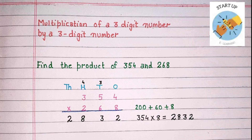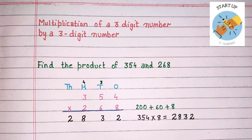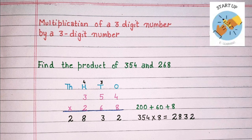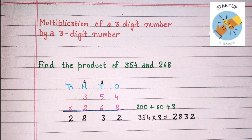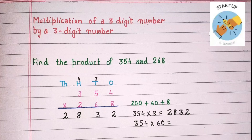Now 8 will be multiplied by the digit at the tens place: 8 fives are 40, plus 3 carry over, is equal to 43. So 3 will be written under tens and 4 will be carried on to hundreds. Now 8 will be multiplied by the digit at the hundreds place: 8 threes are 24, plus 4, is equal to 28. 8 will be written under hundreds place and 2 will be written under thousands place. So when we multiply 354 by 8, we get partial product 1, that is 2832.